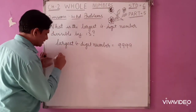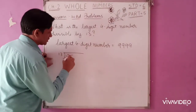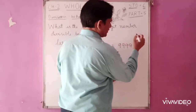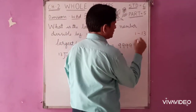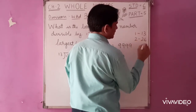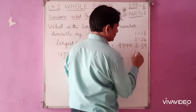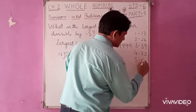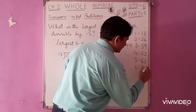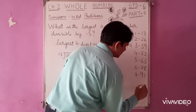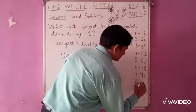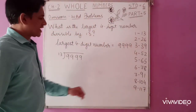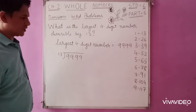Divisible by 13, so we are dividing 9999 by 13. You know the table of 13, but I will write it for your reference: 13 ones are 13, 13 twos are 26, 3s are 39, 4s are 52, 5s are 65, 6s are 78, 7s are 91, 8s are 104, 9s are 117. So the highest multiple of 13 that fits is 117.